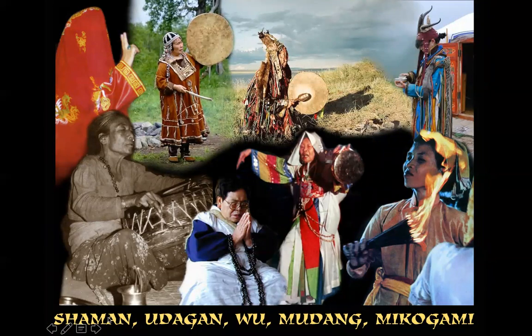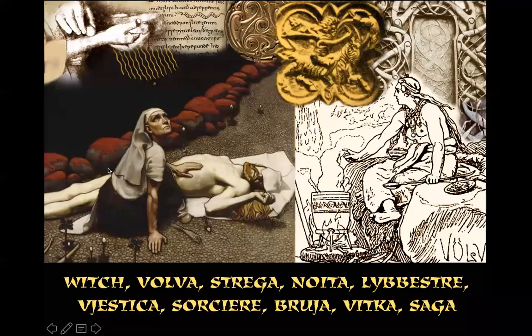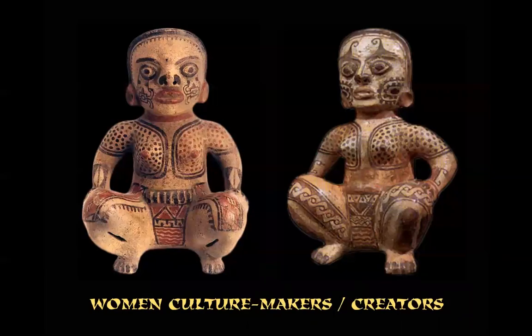Asia is where the word shaman itself originates, among the Tungusic speakers of northeastern Asia. Mongolian and Turkic names include udagan; the Chinese wu; the mudang of Korea; the miko-gami of Japan and many others — you see a lot of sacred drumming. In Europe I've been working intensively on decolonizing European history and recovering knowledge of who the witches were under all their names: völva, strega, noita in Finnish, libistra, Anglo-Saxon, viestitsa — the knower from the various Slavic languages — which originally meant the lot-reader or lot-caster; brucha, vitka, saga — the wise woman.